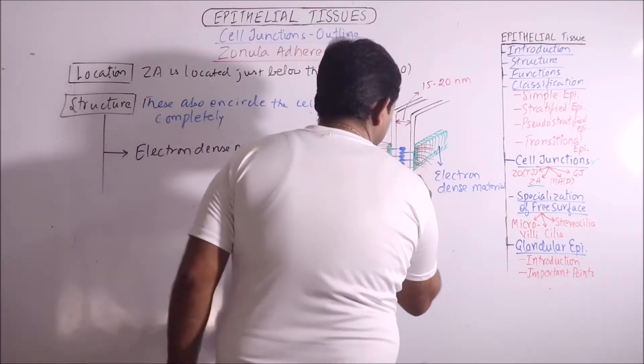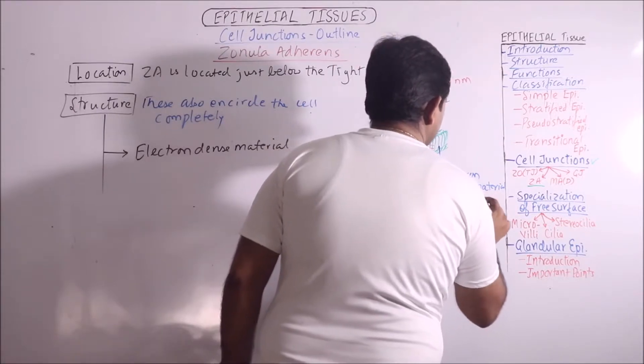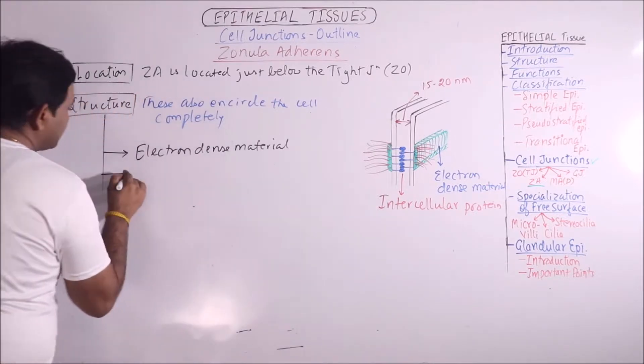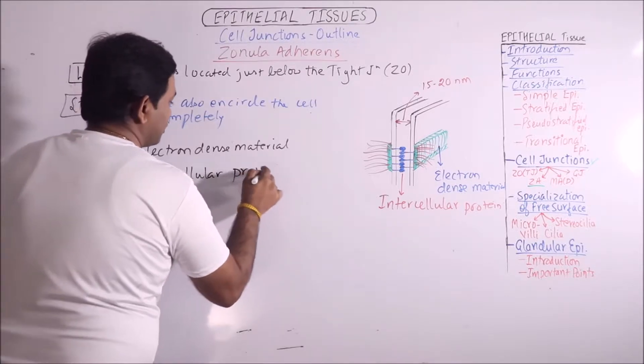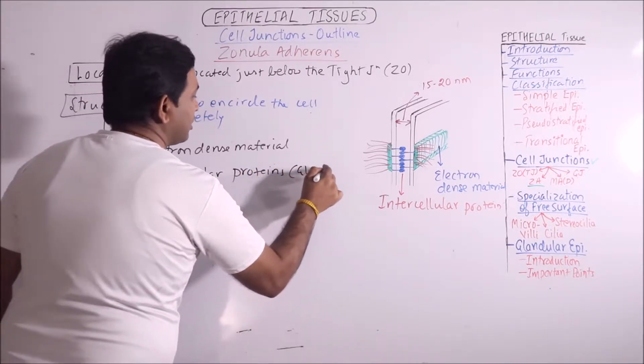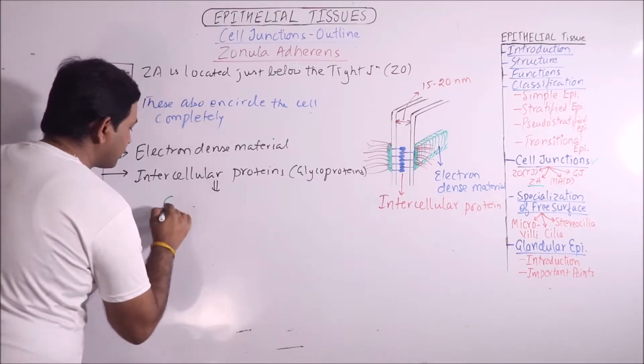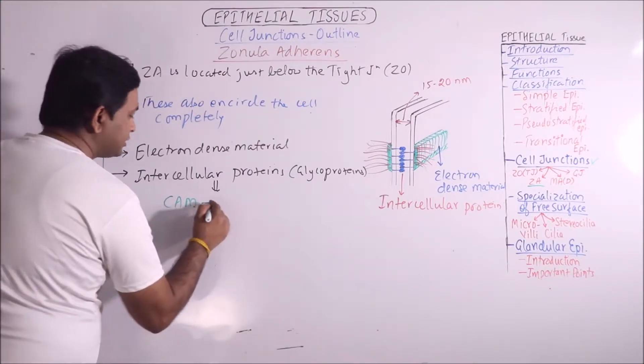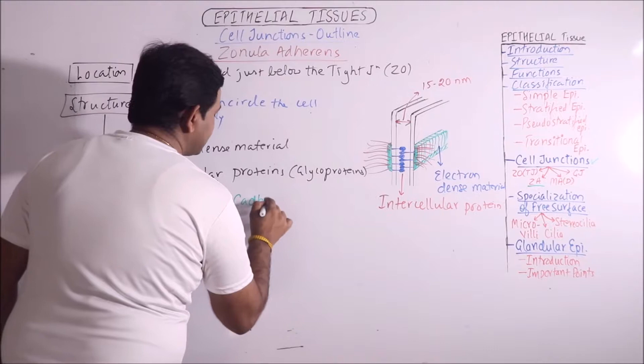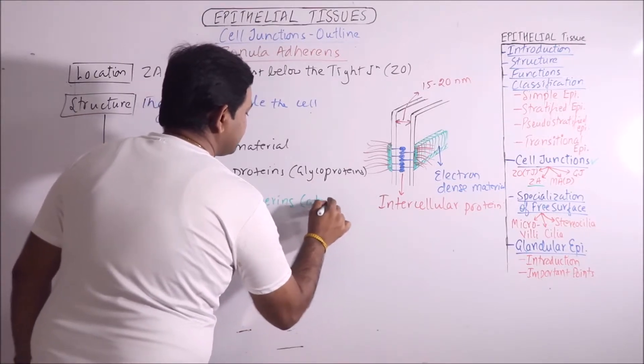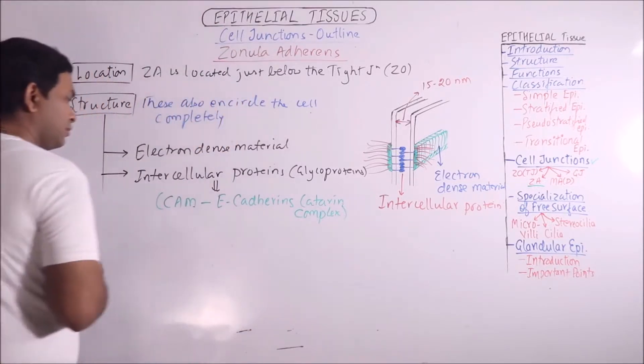Then there are intercellular proteins. So, another component is intercellular proteins which are basically glycoproteins. And most importantly is CAM, that is cell adhesion molecules, in which the most specific and abundant is E-cadherins, cadherin complex.